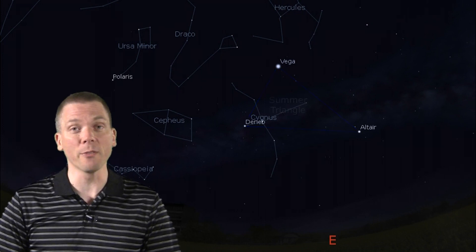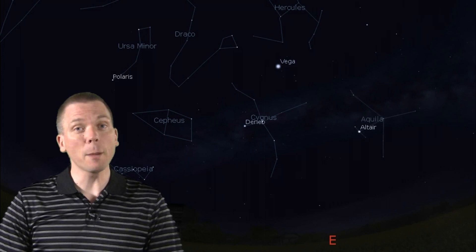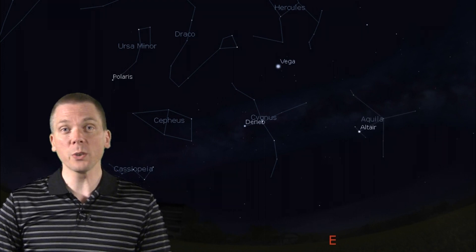Looking to the south is a second member of that, Altair, heading up the beak of Aquila the Eagle.